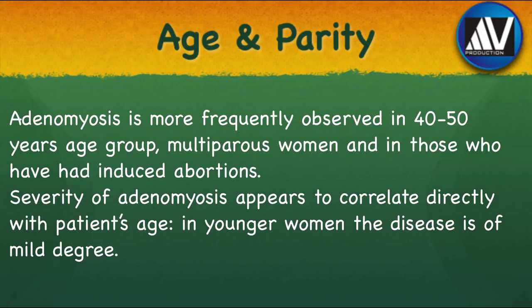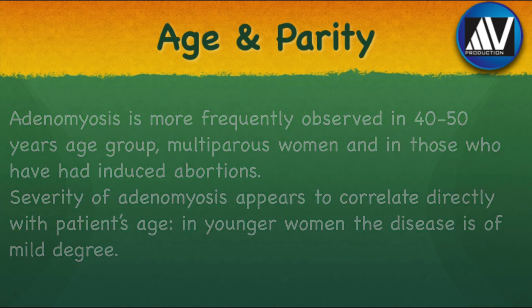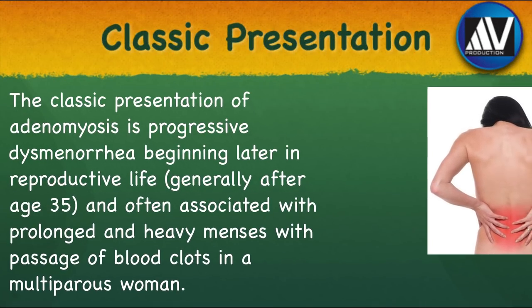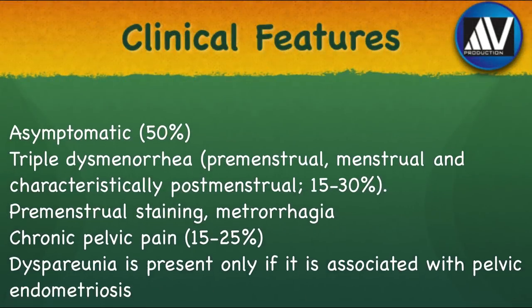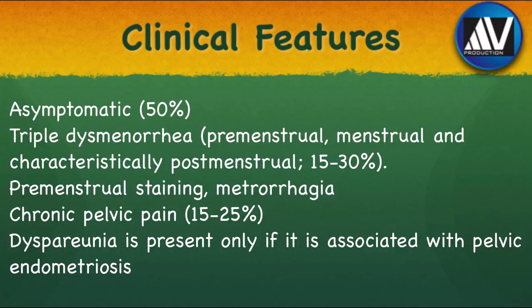Adenomyosis is more frequently observed in the 40–50 years age group, multiparous women, and in those who have had induced abortions. Severity of Adenomyosis appears to correlate directly with the patient's age. In younger women, the disease is of mild degree. The classic presentation of adenomyosis is progressive dysmenorrhea beginning later in reproductive life, generally after the age of 35, and often associated with prolonged and heavy menses with passage of blood clots in a multiparous woman. A high degree of clinical suspicion is of paramount importance in the diagnosis of this histopathological entity.